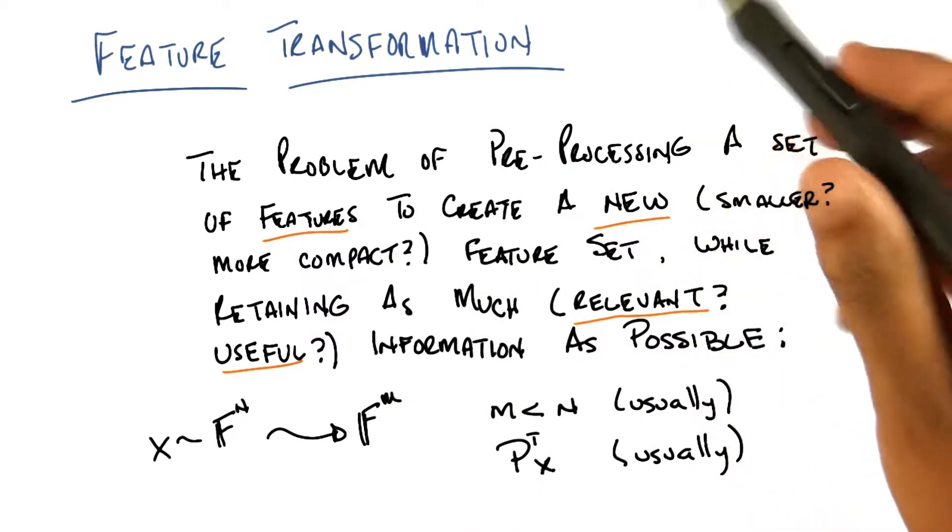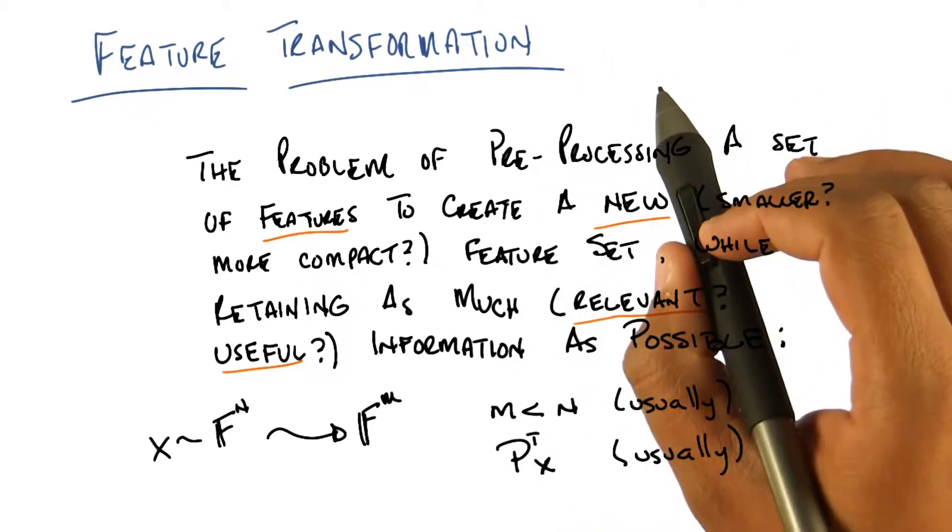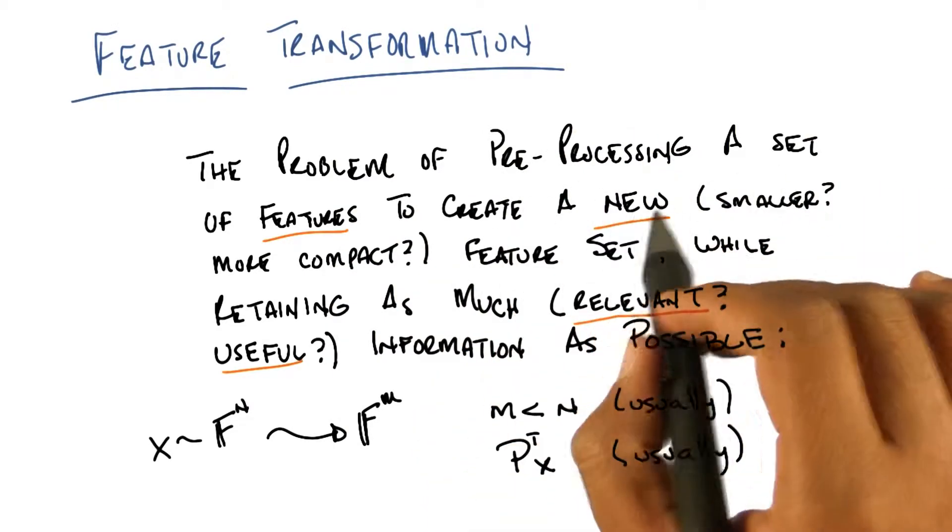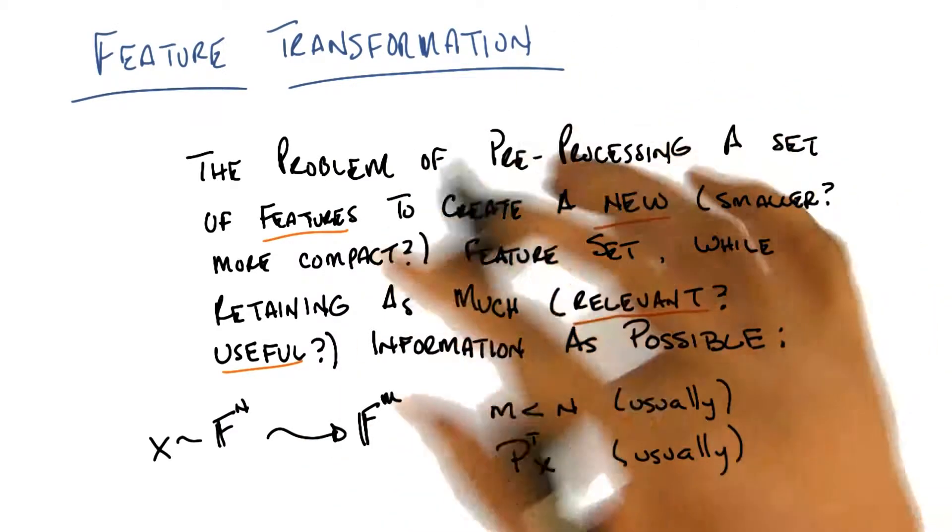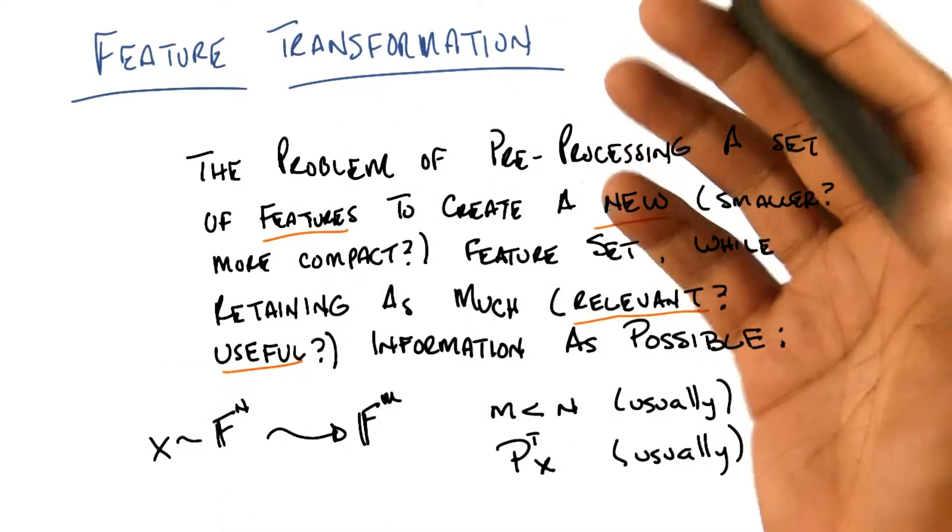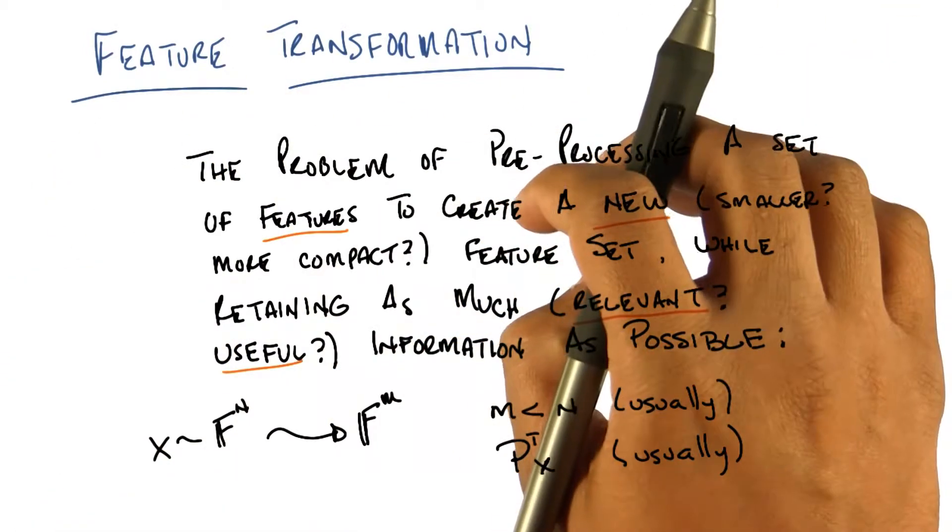Yeah, definitely. Okay, now the difference is, in fact, probably the right way to think about this is that feature selection is, in fact, a subset of feature transformation. Where the preprocessing you're doing is literally taking a subset of the features. Here, feature transformation can be more powerful and can be an arbitrary preprocessing, not just something that goes from a set to a subset.